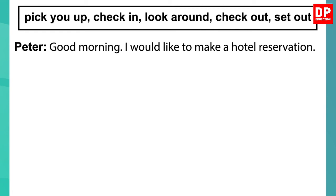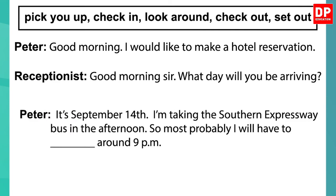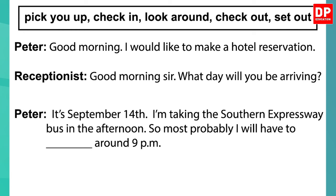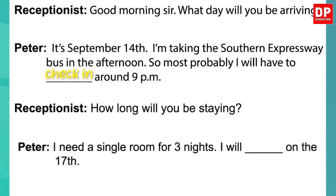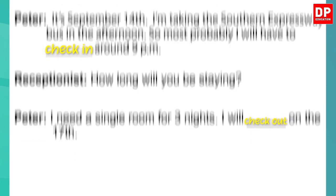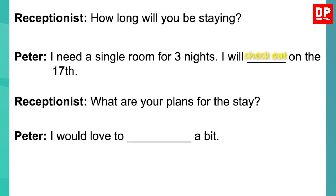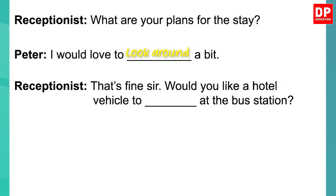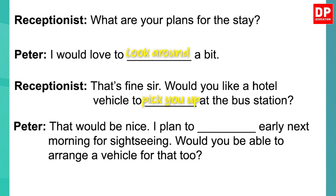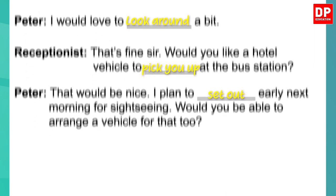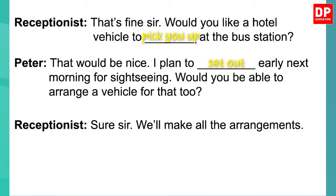Let's see how you have done it. Let's read the completed dialogue. Good morning. I would like to make a hotel reservation. Good morning sir. What day will you be arriving? It's September 14th. I'm taking the Southern Expressway bus in the afternoon, so most probably I will have to check in around 9 pm. How long will you be staying? I need a single room for three nights. I will check out on the 17th. What are your plans for this day? I would love to look around a bit. That's fine sir. Would you like a hotel vehicle to pick you up at the bus station? That would be nice. I plan to set out early next morning for sightseeing. Would you be able to arrange a vehicle for that too? Sure sir. We'll make all the arrangements. Thank you. You're welcome. I hope you got all the answers correct.